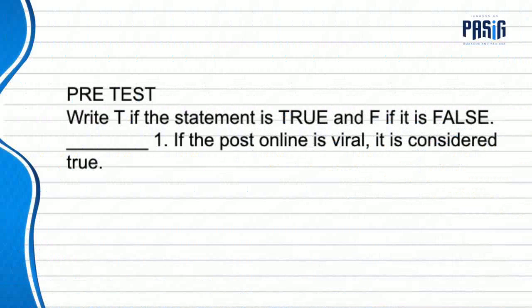Before we start our lesson for today, I want you to determine whether the following statements are true or false. Write T if the statement is true and F if it is false in your notebook. You can pause this video for each item so you can think of your answers carefully. Number one: if a post online is viral, it is considered true. The answer is false.